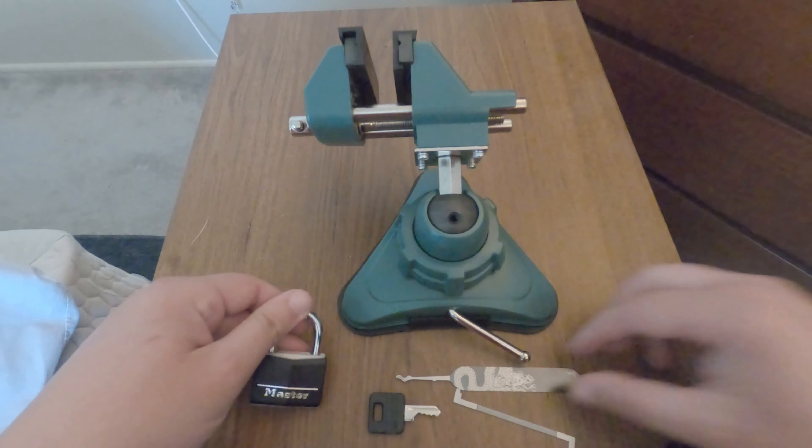Okay, so we got my lovely new pick and we're also going to be using a double-sided tension wrench. This side's got a little indent with little teeth and hooks. That's the side we're going to be using. So we're going to put this in here at the top. I'm going to use top of the keyway tension.